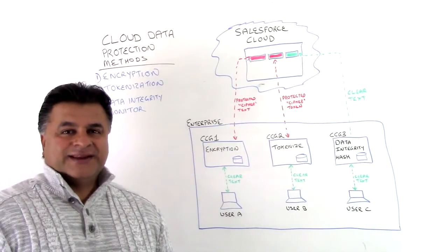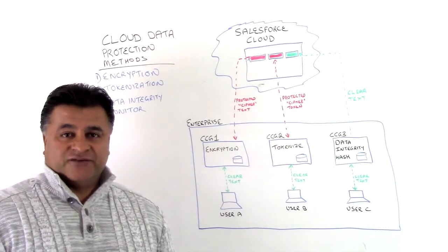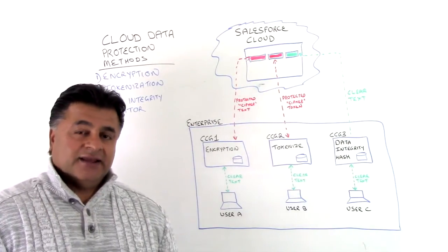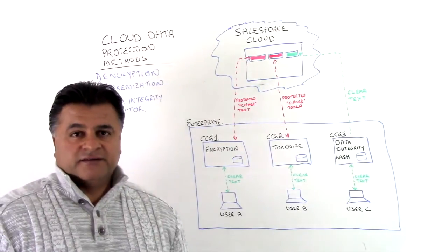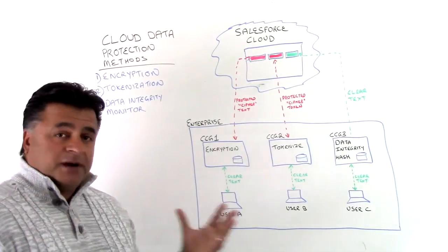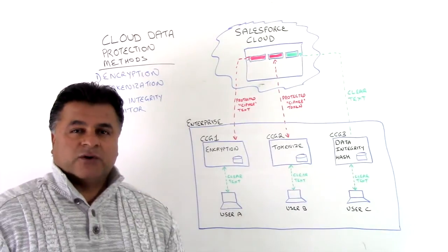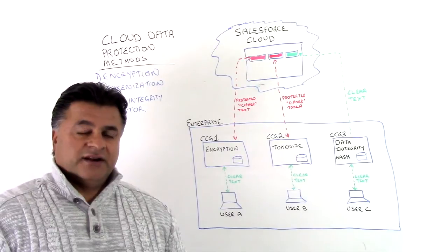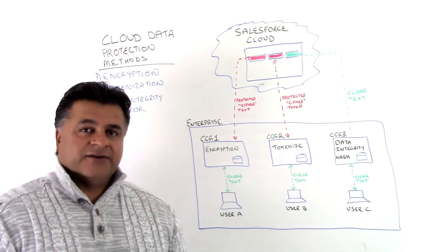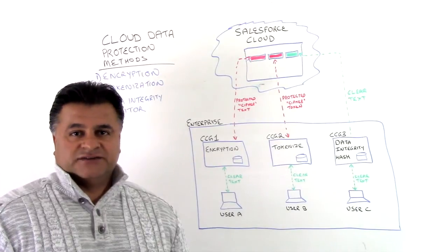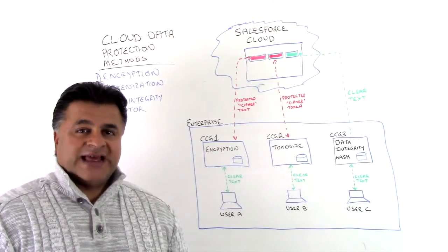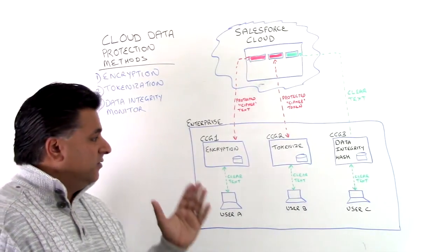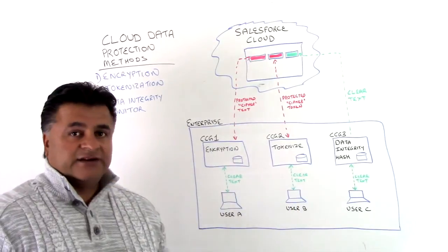In summary, these three data protection methods allow you a diverse way to protect your data and keep track of who is actually modifying the data in the cloud. Customers, based upon their use cases, will use a combination of one, two, or possibly all three depending upon their requirements. These are the essential building blocks for starting your data protection policy. As you lay that foundation, you can look into additional layers of security with anti-virus, anti-malware, data loss prevention, and other components that complement the base level of encryption, tokenization, and data integrity monitoring.